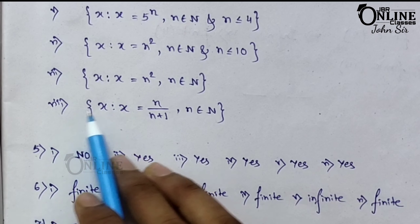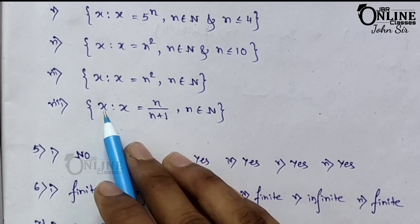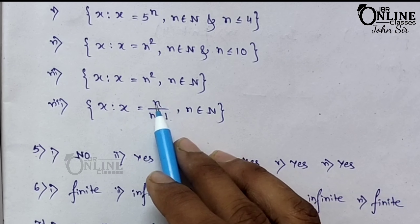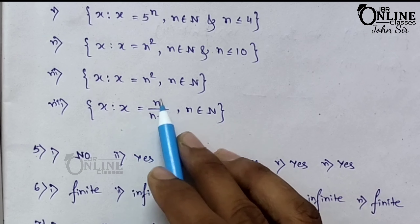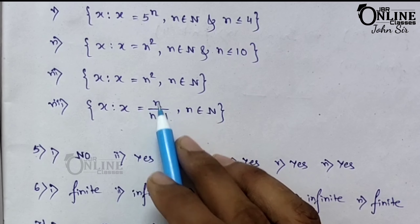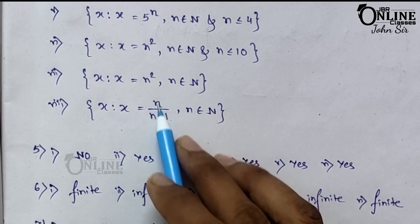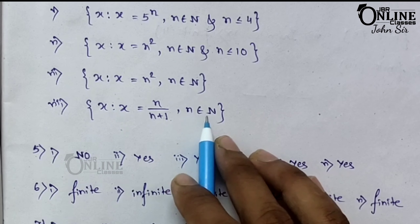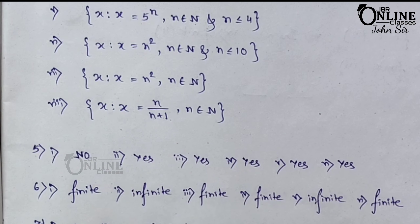Number 8: {1/2, 2/3, 3/4, 4/5, ...}. Write as: {x | x = n/(n+1), n belongs to natural numbers}. When n = 1: 1/(1+1) = 1/2; n = 2: 2/3; n = 3: 3/4. This pattern continues with no end, so only N belongs to natural numbers with no boundary.